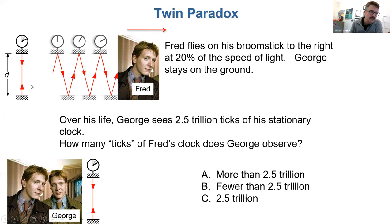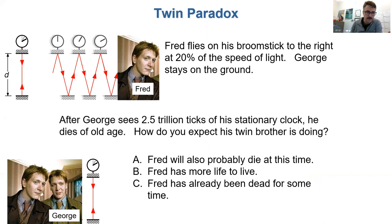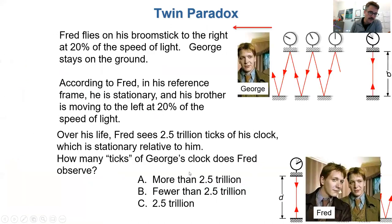Remember, instead of tick, tick, tick, there's tick, tick, tick. So he's going to observe fewer than 2.5 trillion. So what's going to happen is if he's about to die, Fred will live longer. So this is like the fountain of youth. If you travel fast enough, time slows down for you, you live longer. So Fred will probably have more life to live, okay, is the idea.